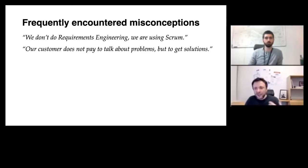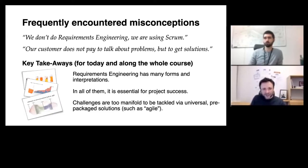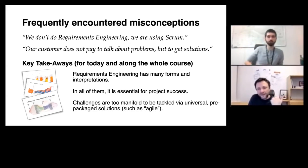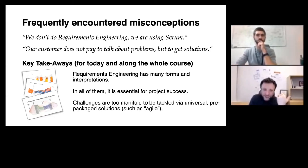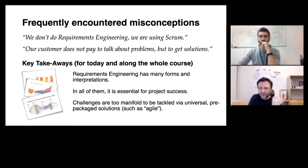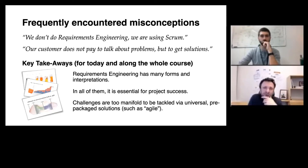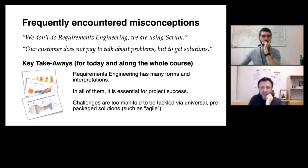Everything we do in requirements engineering needs to fulfill a specific purpose. We'll be talking a lot about the purpose of why we do certain things in requirements engineering. Three key takeaways I would like you to take from not only today, but also the rest of the course: requirements engineering can have many different forms and interpretations. Agile is one of them. And in all of them, it is essential for project success. If you don't efficiently handle your requirements, chances are very high that you will be delivering a product that nobody needs. The challenges in requirements engineering are very manifold and are too manifold to be addressed via universal pre-packaged solutions such as Scrum.